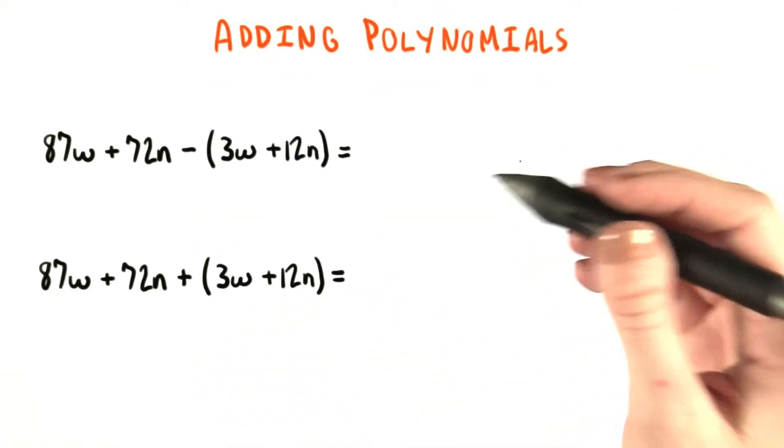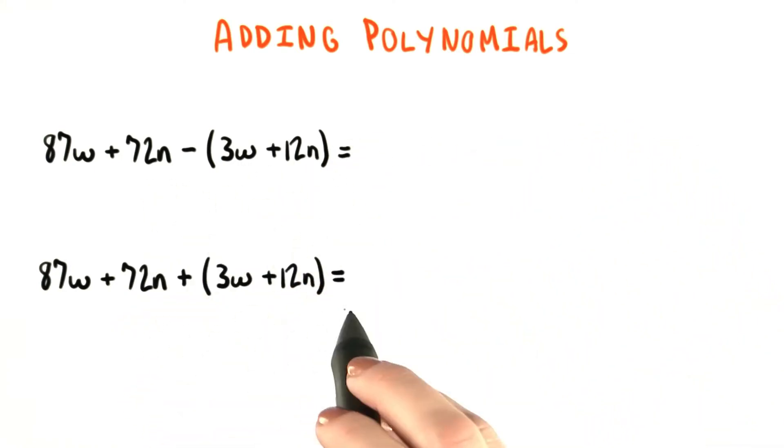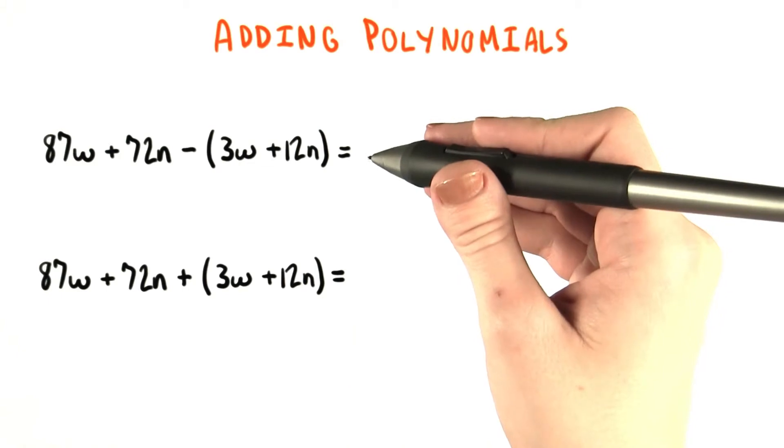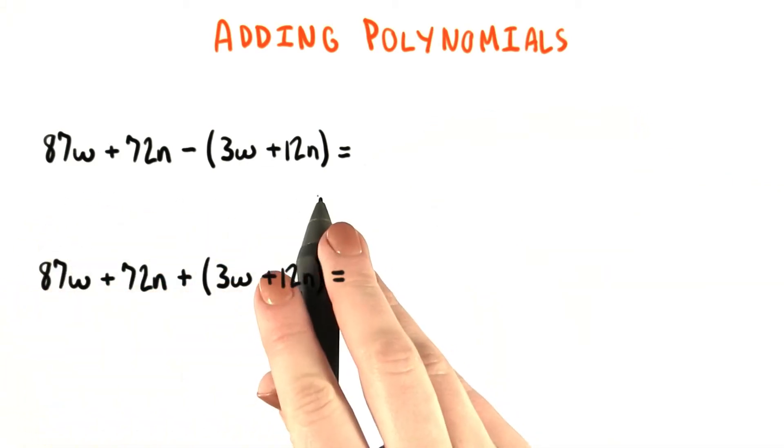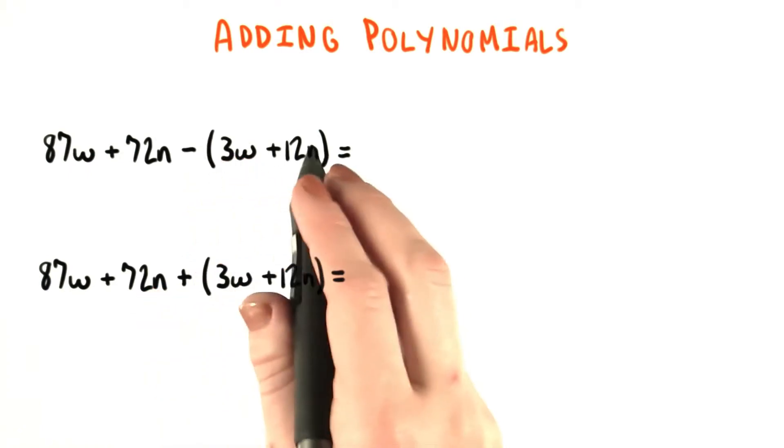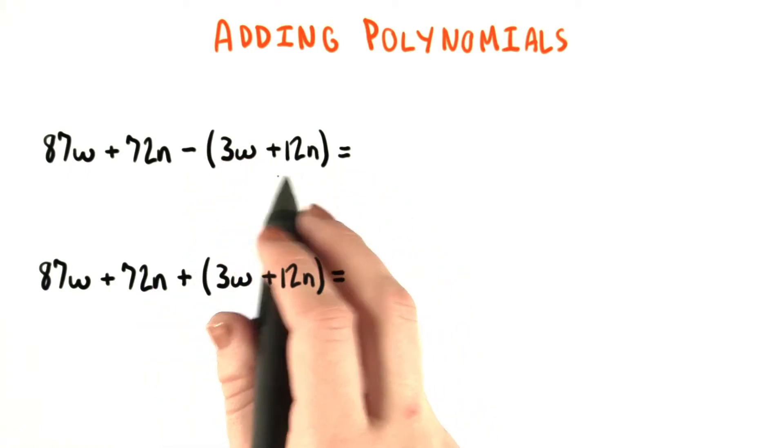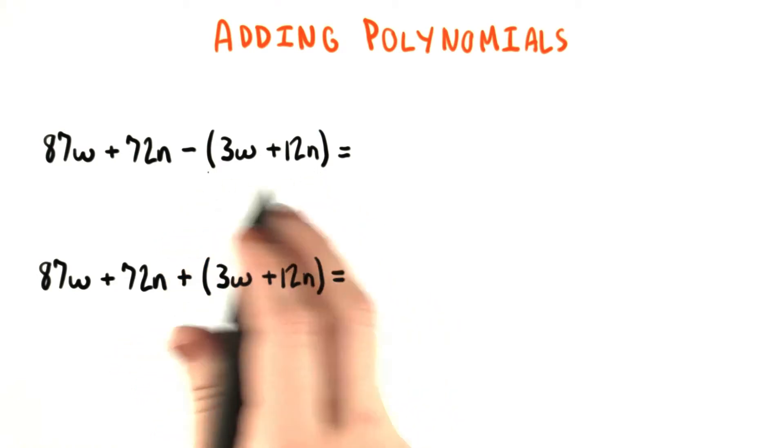Let's start out by comparing what the difference is between subtracting polynomials and adding polynomials. So this first expression is what we dealt with in the last quiz. We saw that because there's a minus sign in front of a quantity with parentheses around it, we need to change the sign of the operator that's in front of the 12n here, that's inside the parentheses.